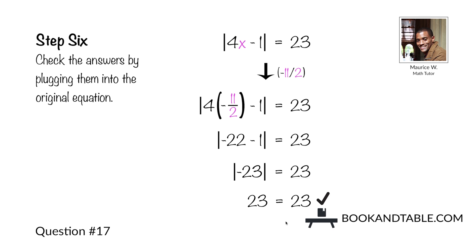Check both answers by plugging them back into the original equation. Plug in negative 11/2: 4 times negative 11 is negative 44, divided by 2 is negative 22, negative 22 minus 1 is negative 23, and the absolute value of negative 23 is 23 — so 23 equals 23 confirms x is equal to negative 11/2.